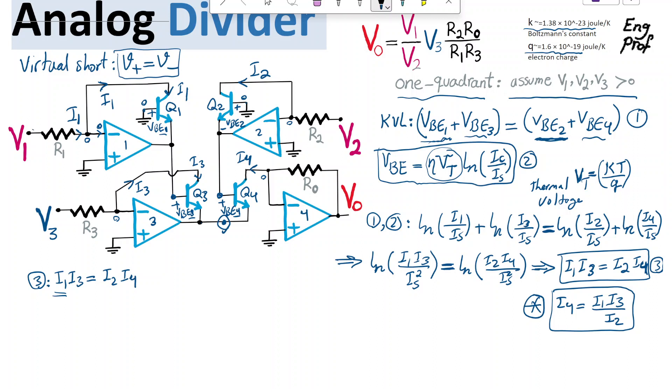So whatever current that goes through R1 keep going up. As a result, I can say I1 is simply V1 over R1, because V1 is the only voltage across resistor R1.